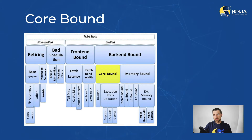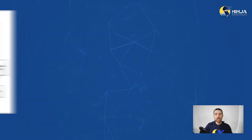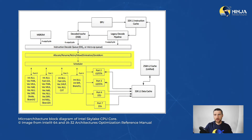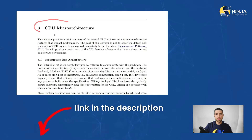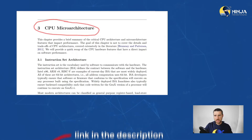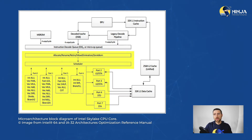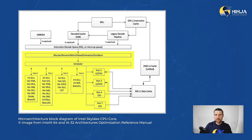Let's start with saying a few words about what the core-bound category represents. Here is a microarchitecture block diagram of a typical CPU core. The highlighted part is the out-of-order engine which executes all the instructions. You can find a more detailed description of a CPU backend architecture in chapter 3 of my book. Generally speaking,